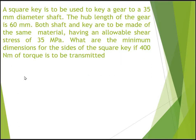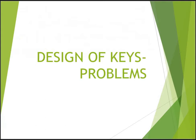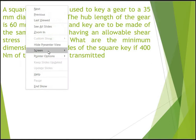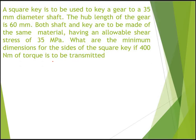Welcome to the course on design of machine elements. In this lecture we are discussing a few problems related to design of keys. The first problem is: a square key is to be used to key a gear to a 35mm diameter shaft. The hub length of the gear is 60mm. Both shaft and key are to be made of the same material having an allowable shear stress of 35 megapascal. What are the minimum dimensions for the sides of the square key if 400 Newton meter of torque is to be transmitted?